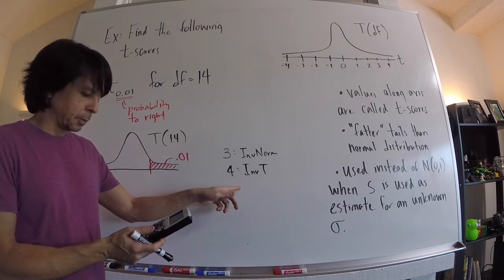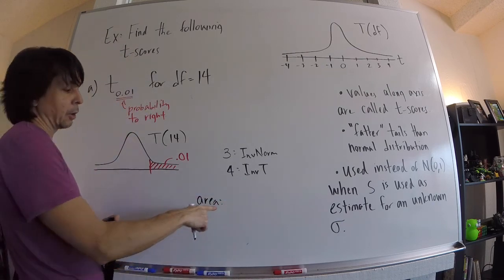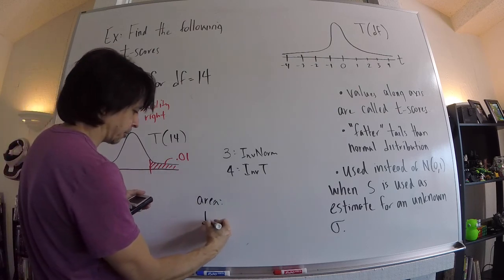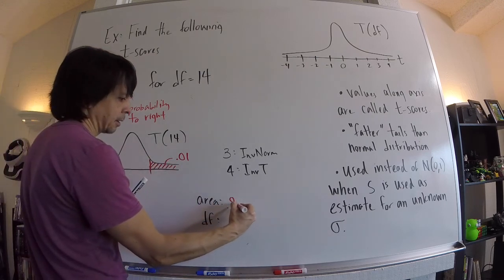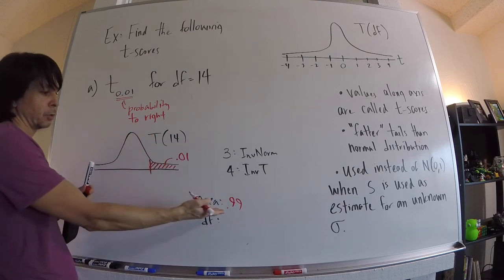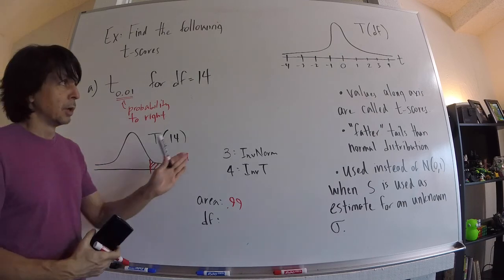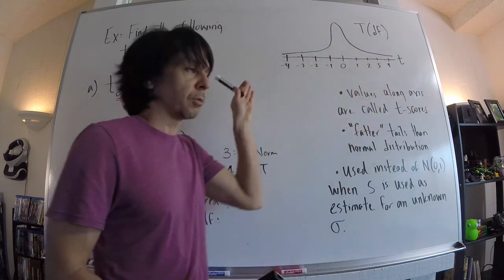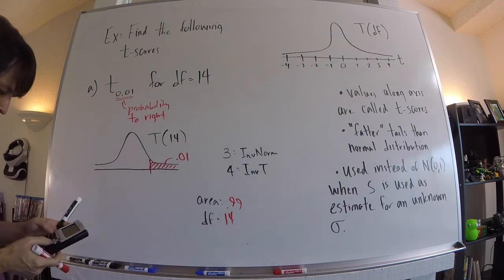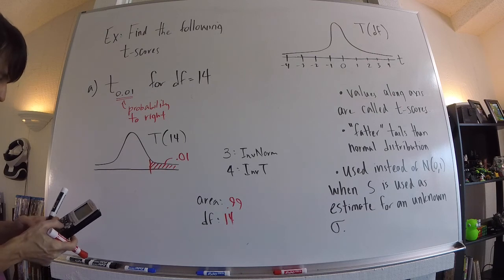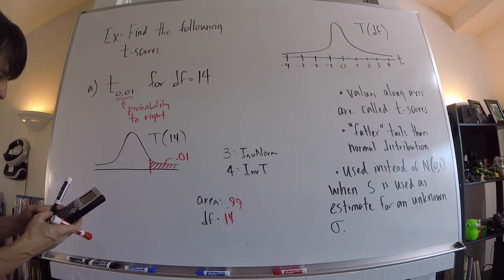When you hit enter it prompts you for an area — like inverse norm, that's the area to the left — and then it has a DF field in addition to that. So you can either enter the area to the left, which is 0.99, or enter 0.01 and just drop the negative sign on the result. Since it's going to be a positive value — 99% to the left, 1% to the right — then type in your DF of 14 and hit enter. We're all going to work with the result: 2.624.